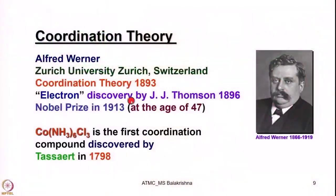Coordination theory is synonymous with Alfred Werner. As mentioned, at the age of 29 he became full professor of chemistry at Zurich University. He started this pioneering work at the age of 26, when no instrumental facilities — whether analytical or spectroscopic — were available. Not only that, even the atomic structure was not known and even electrons were not known. He proposed coordination theory in 1893; recall that electrons were discovered by J.J. Thomson in 1896.